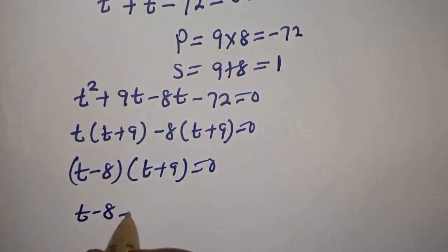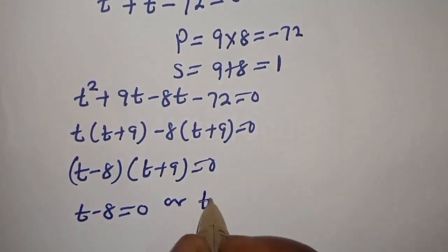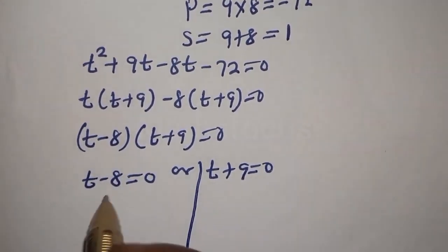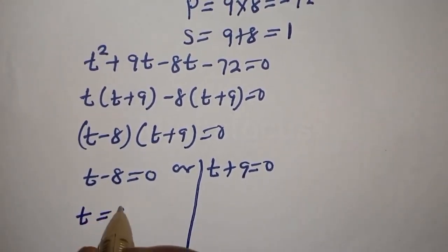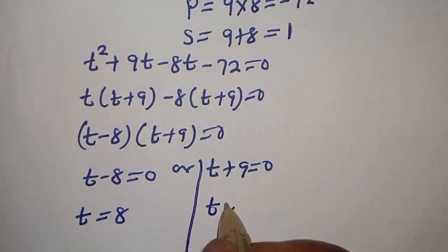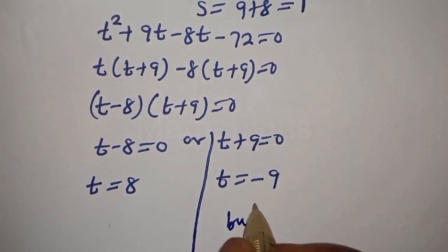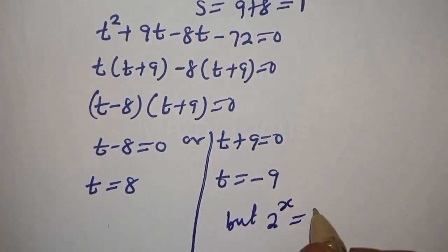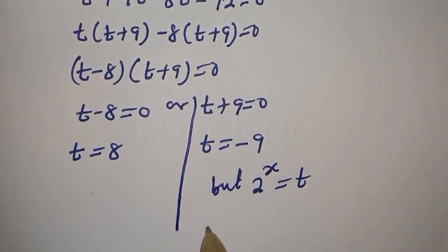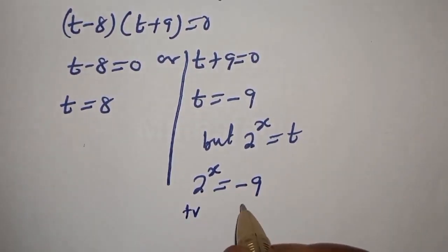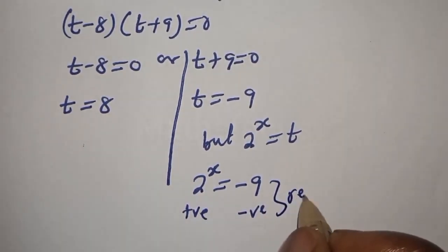There are two cases: t minus 8 is equal to 0, or t plus 9 is equal to 0. Now, 2 raised to power s equals t, so t plus 9 equals 0 gives 2 raised to power s equal to minus 9. Since 2 raised to any power is always positive and minus 9 is negative, this case is rejected.